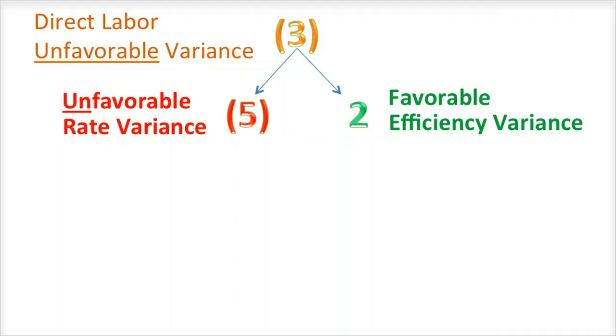Once management determines what type of variance occurred, it will then dig deeper to determine the causes of both the unfavorable and the favorable variances. And if the cause needs to be fixed, they will develop a plan to fix it.